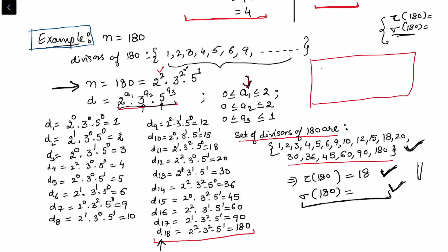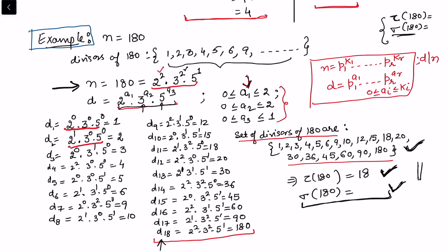The theorem states: whenever n has prime factorization p1^k1 × ... × pr^kr, if d is a divisor of n then d must also take the form p1^a1 × ... × pr^ar, where each ai satisfies 0 ≤ ai ≤ ki. Let's first prove this result, then proceed to the formulas for sigma and tau.